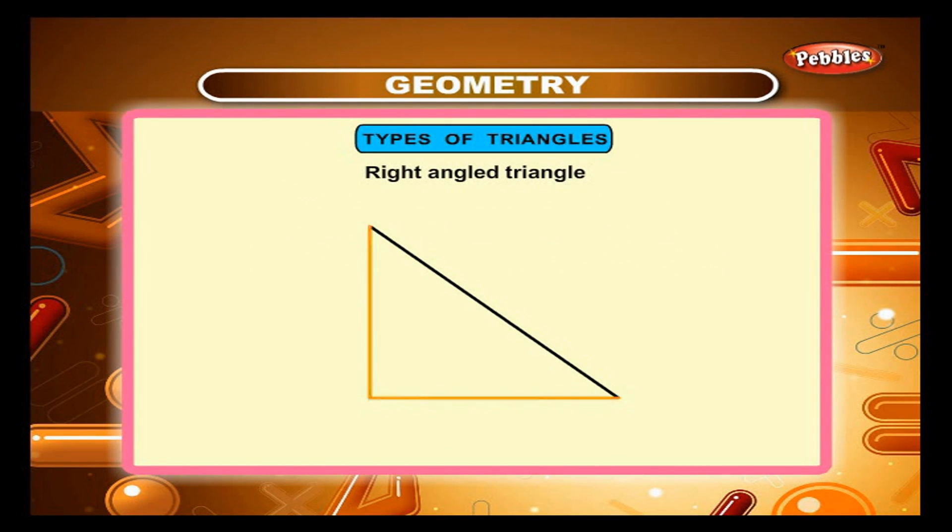Types of Triangles. A triangle with one right angle is called a right angle triangle. In triangle ABC, angle ABC is a right angle. The right angle is often marked as shown. A triangle with one obtuse angle is called an obtuse angle triangle. Angle XYZ is an obtuse angle.